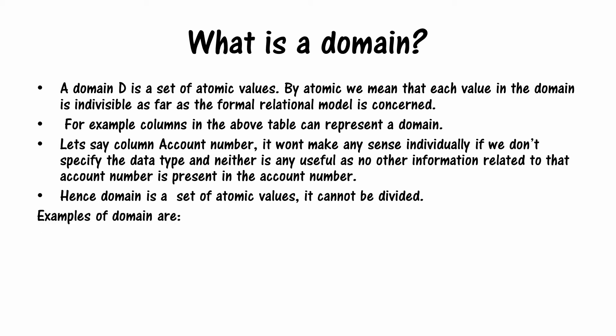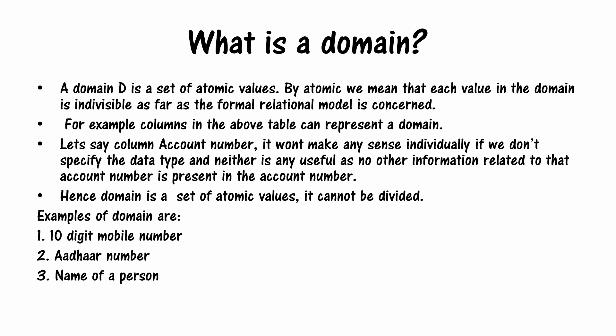Examples of domain include the branch column and the account number column we've already seen. Similar examples are a 10-digit mobile number — you cannot divide a mobile number further — or an Aadhaar number, or the name of a person. These can each be listed in one column because they are a single type of data.